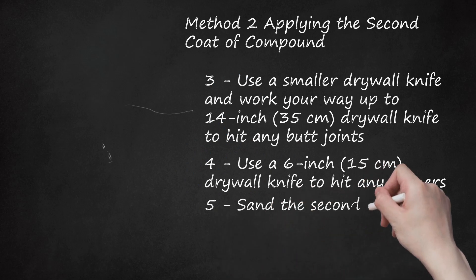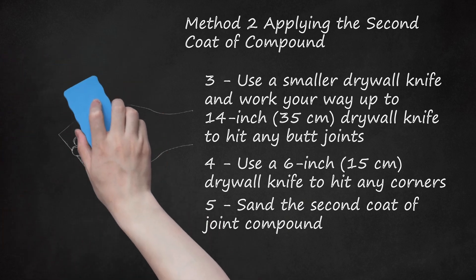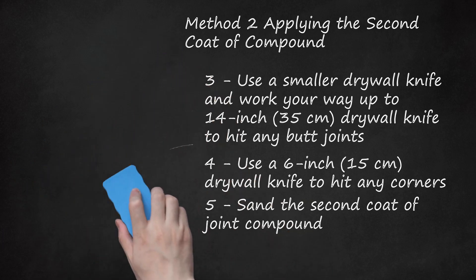Step 5: Sand the second coat of joint compound. After 24 hours, sand it down gently to smooth it. Use a light grit sandpaper and do not sand too hard. You just want to smooth off a little bit of the coarse compound. You don't want to take the entire sheetrock cover off.